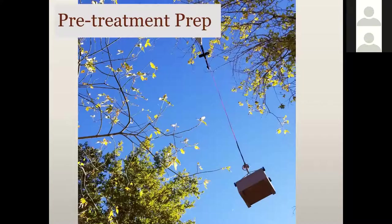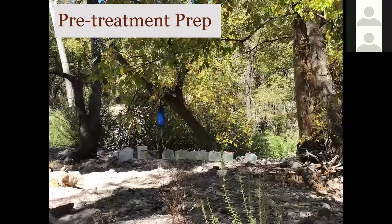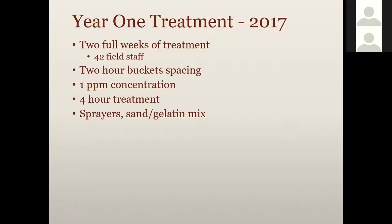Prior to applying any chemical to the stream, we had to get everything there — flying gear in and packing things on mules and horses. Our approach to the drinking water issue was to go in the week prior and collect containers of water from the stream to filter for drinking. Those were all at camp before people arrived during the application week. All of that happened before we put one drop of rotenone in the stream. We started this project officially in early 2015 or 2016, so it took two years just to get to the point where we were putting chemical in the water.